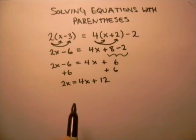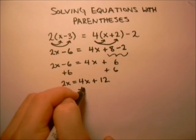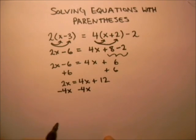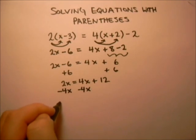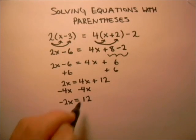Now we want to get all the x's over onto the left hand side, and so we'll subtract this minus 4x from both sides. Now 2x minus 4x is going to give us negative 2x, and then over on the right hand side we still have 12.